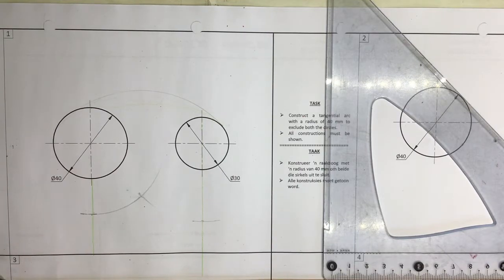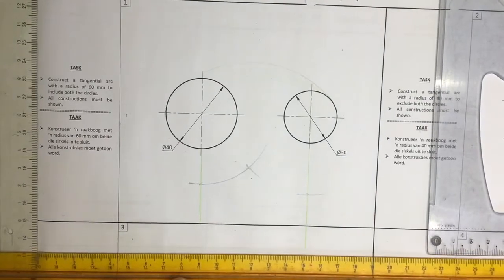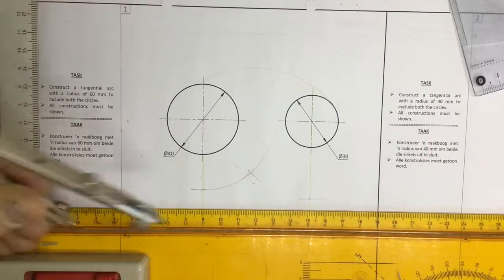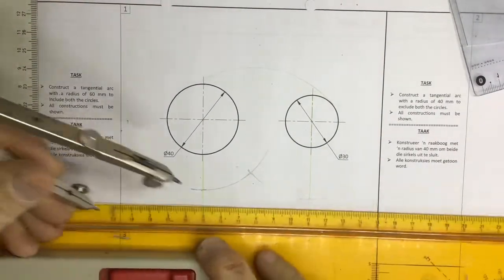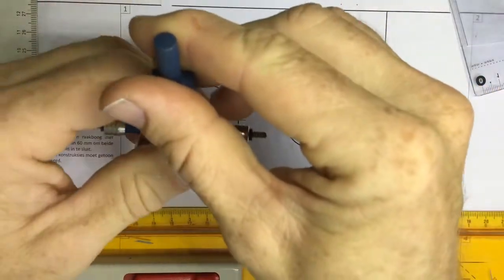So you set your pair of compasses. Let me just get a ruler here so that you can see this idea. Set your pair of compasses to a radius of 60 millimeters.